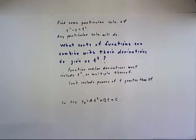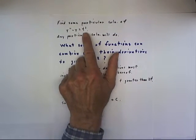So the question is, what sorts of functions can we combine with their derivatives in order to end up with t squared?